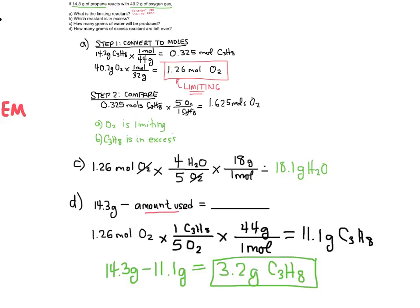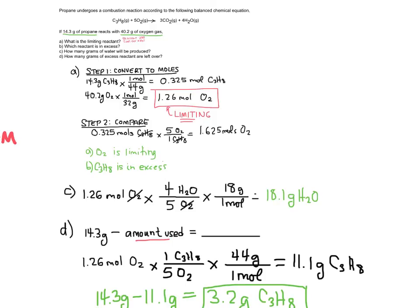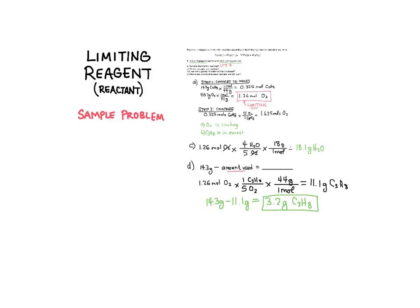This is an example of a limiting reactant problem. We did a lot: we started by finding the limiting reactant in a two-step process — first converting the given quantities into moles so we could compare them, then using the balanced chemical equation as a recipe. We found that 0.325 moles of propane required 1.625 moles of oxygen, but we only had 1.26 moles, so oxygen was limiting. We then used the limiting reactant to solve for grams of water produced and grams of excess propane remaining.